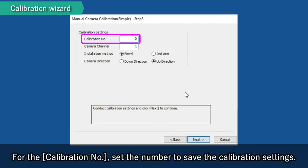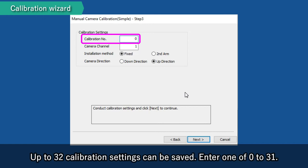For the calibration number, set the number to save the calibration settings. Up to 32 calibration settings can be saved. First, enter one of 0 to 31.